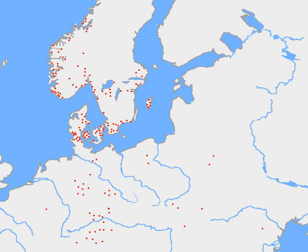In the following table, each rune is given with its common transliteration. The earliest known sequential listing of the alphabet dates to 400 AD and is found on the Kylver stone in Gotland. Two instances of another early inscription were found on the Vadstena and Marietam bracteates, showing the division into three aetts, with the positions of I, P and D inverted compared to the Kylver stone.